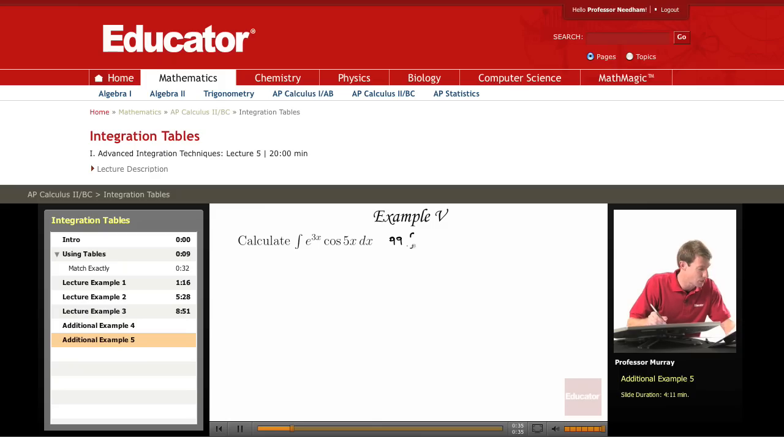So 99 says the integral of e to the au times cosine of bu du is equal to e to the au over a squared plus b squared times a cosine bu plus b sine bu, plus a constant.